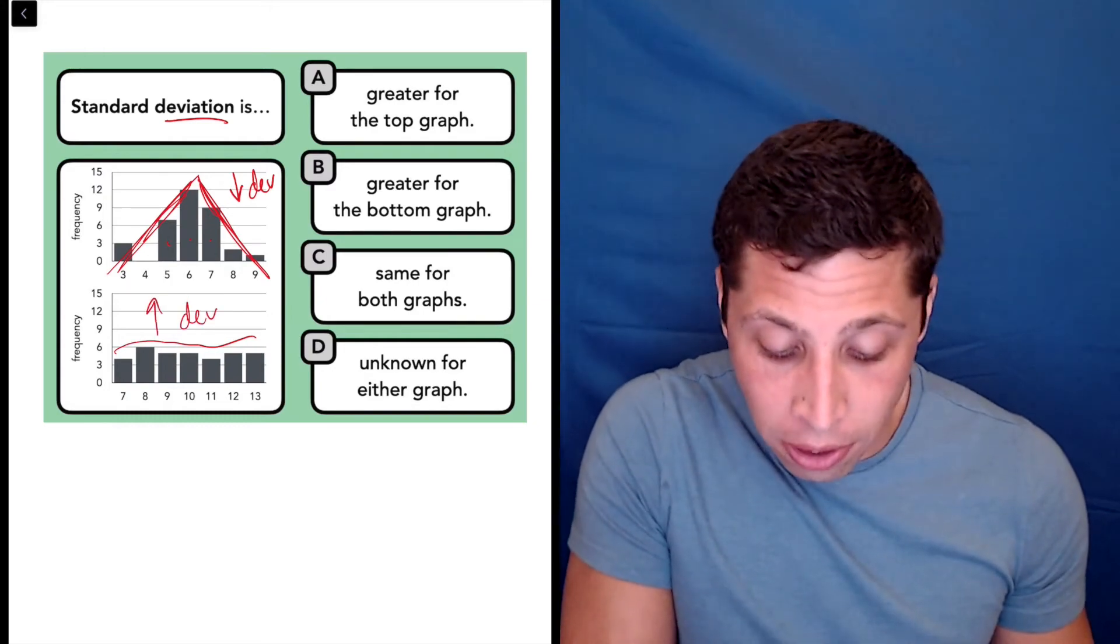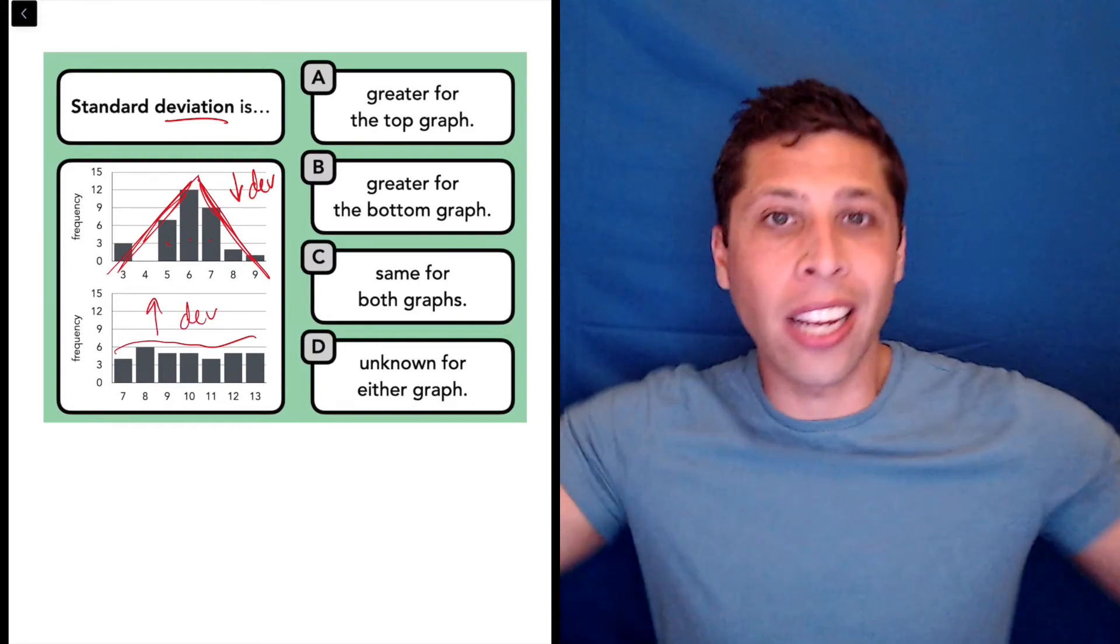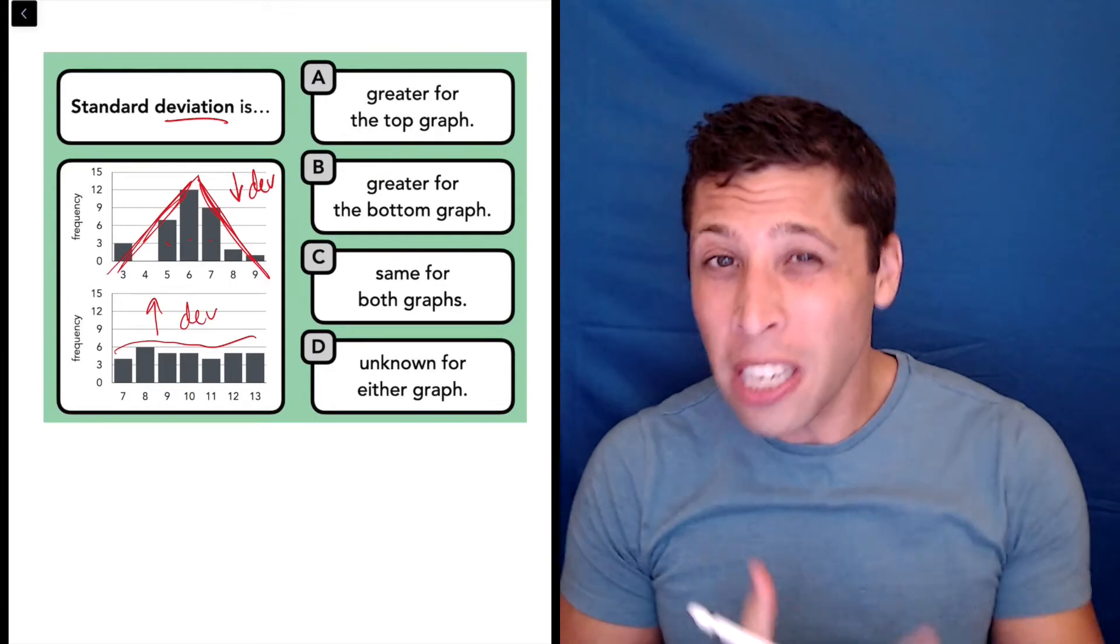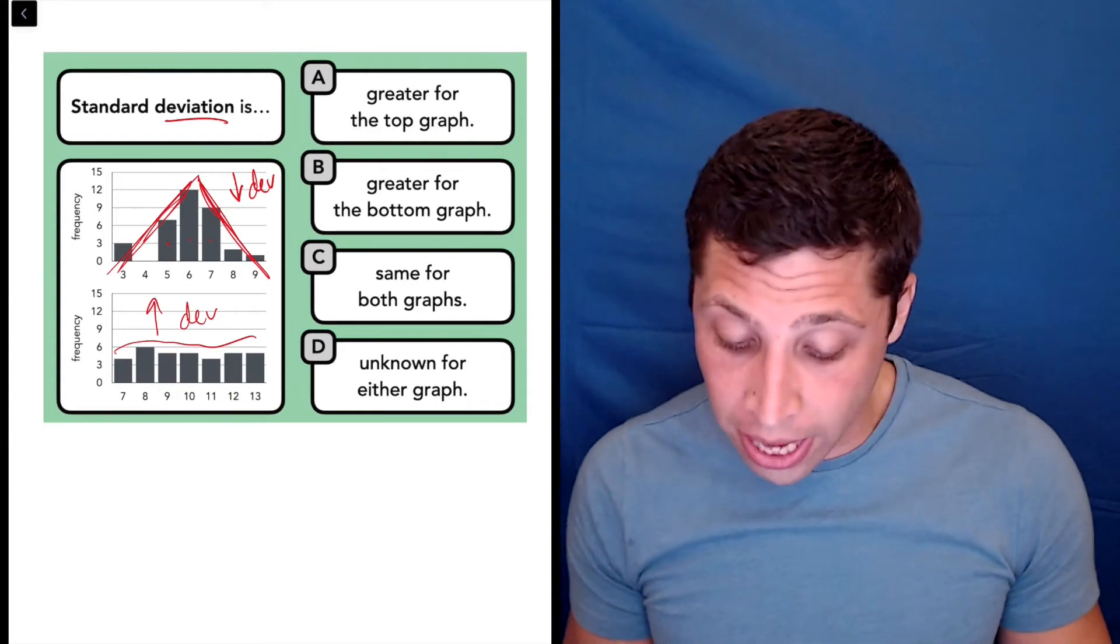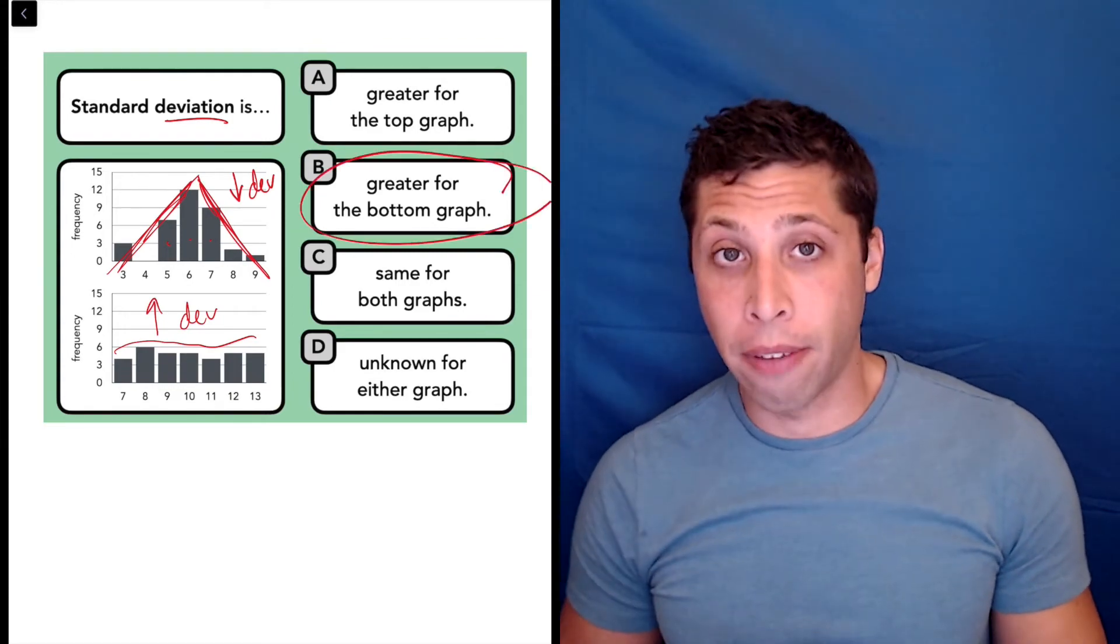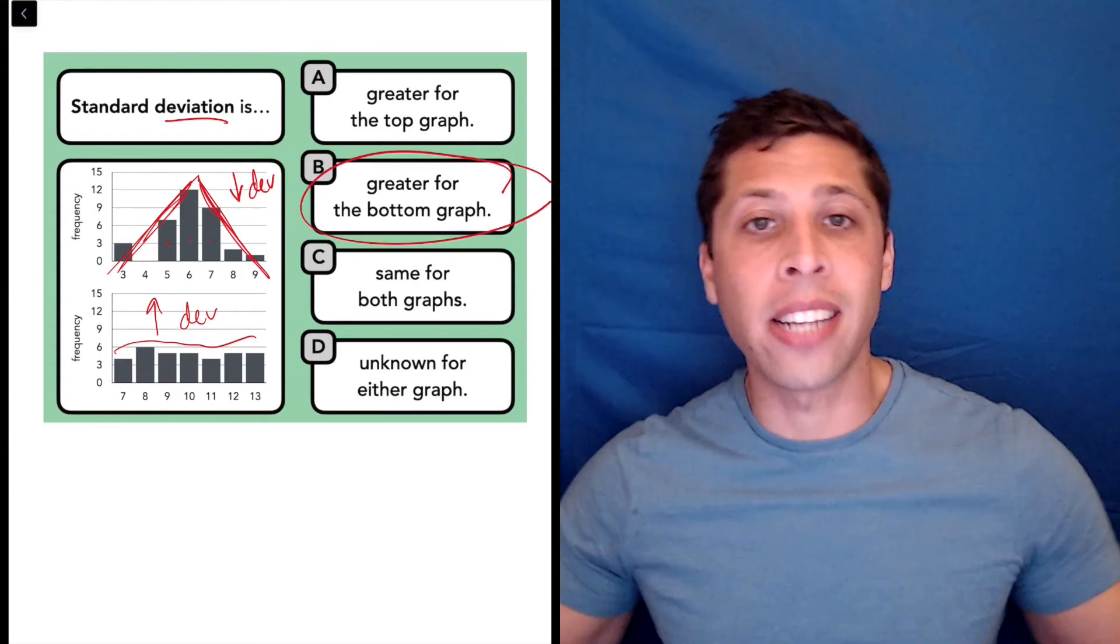So this has lots of deviation. The data in this set is like all over the place. It's hard to even see what the middle is. So when we're asked to compare these things, well we kind of already said it, it's greater for the bottom graph because the data doesn't have a clear middle.